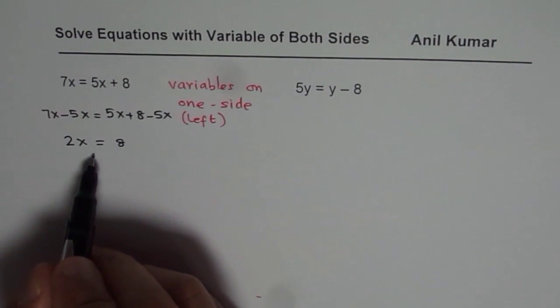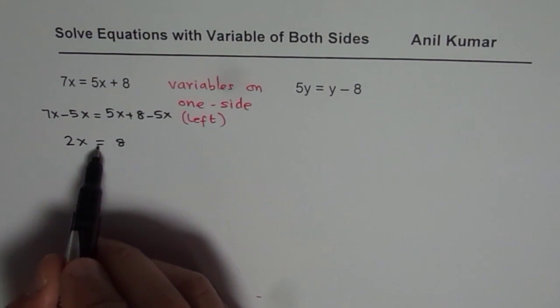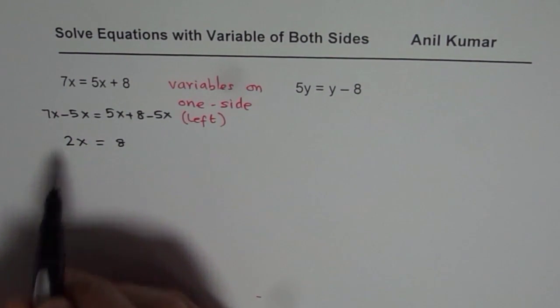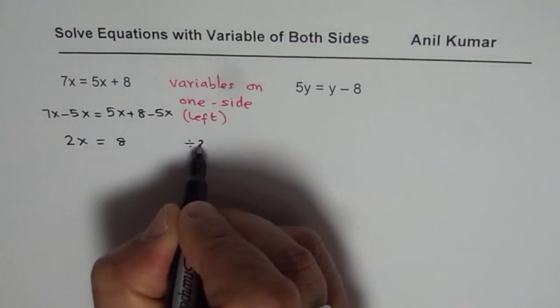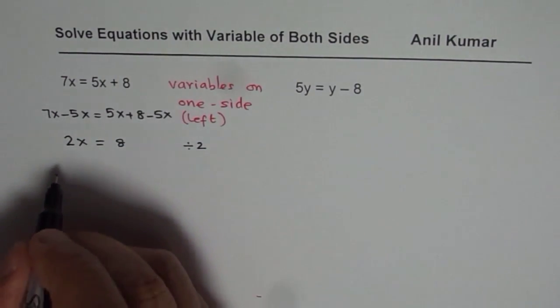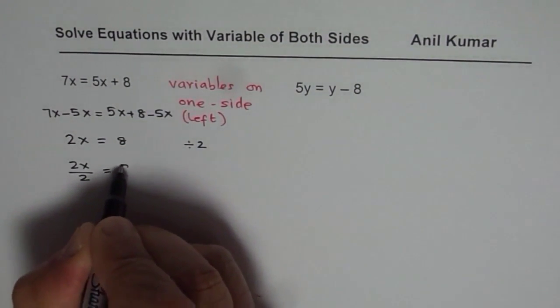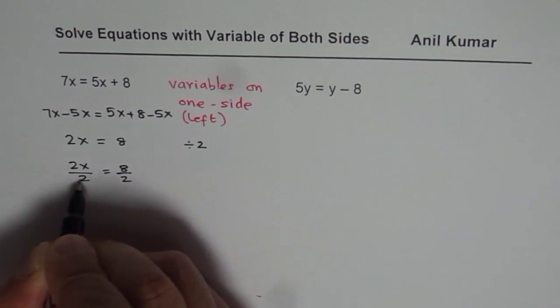Now it becomes simpler. You can now apply the methods which you have learned. 2 times x is 8. To find x we will divide by 2 on both sides. So whatever you do you have to do on both sides. So we get 2x equals 8 both divided by 2.